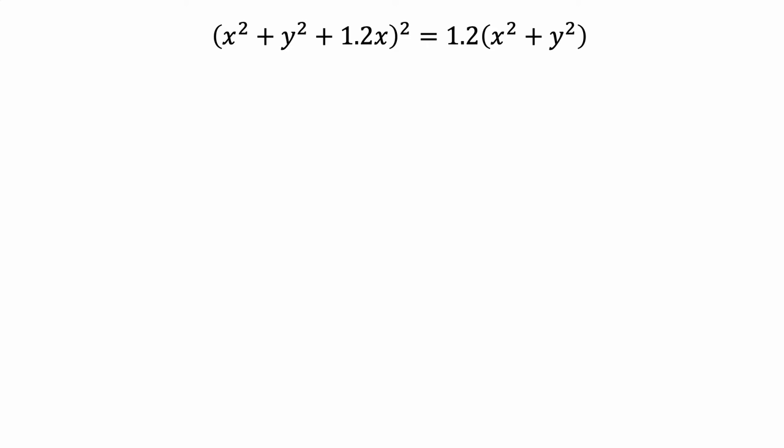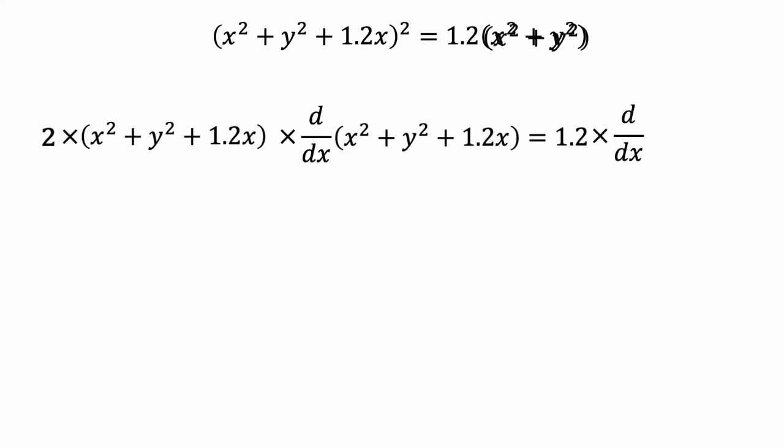The derivative of x-squared is 2x, so we multiply 2 by the argument of the original function, and then multiply by the derivative of the argument. On the right-hand side of the equation, the derivative will be the coefficient, 1.2, multiplied by the derivative of x-squared plus y-squared.